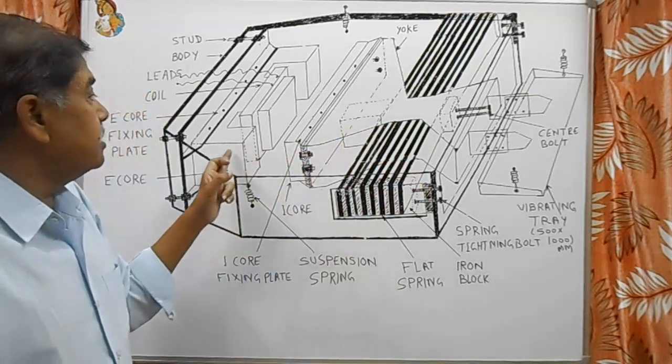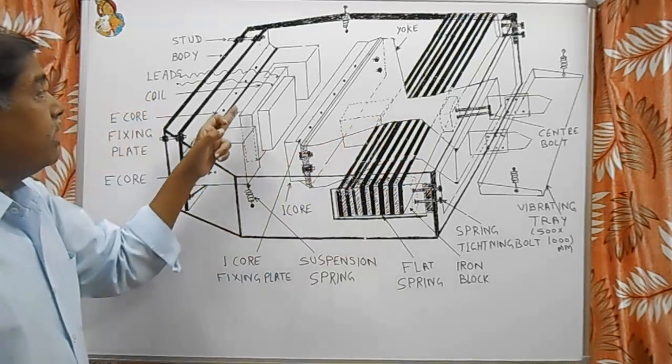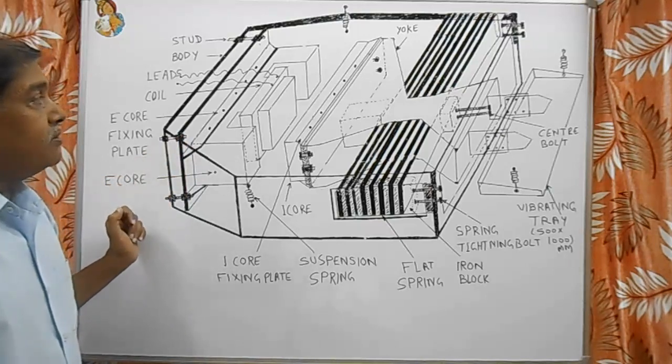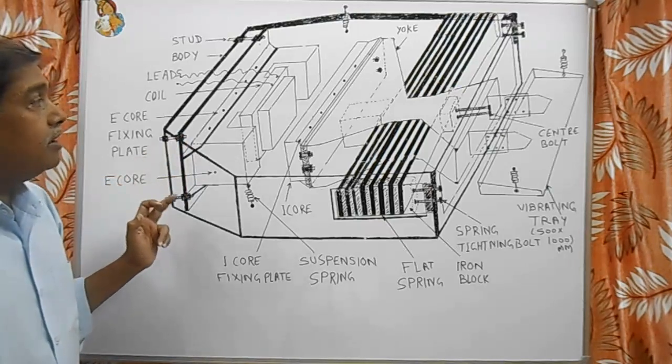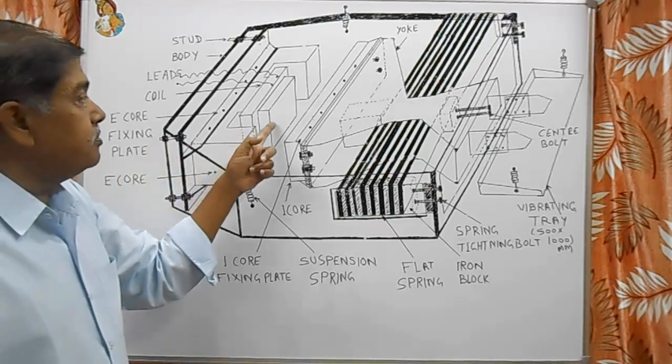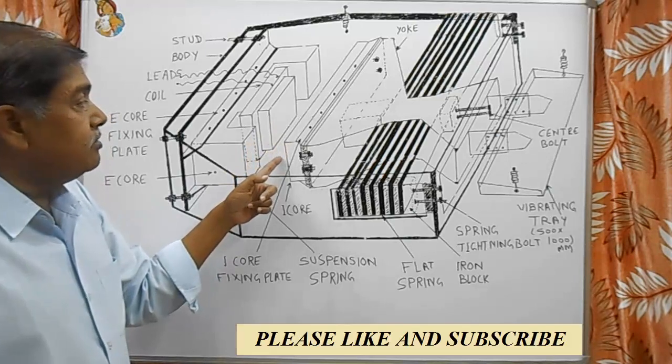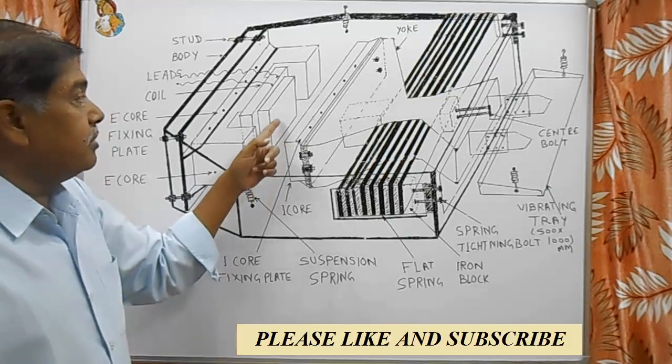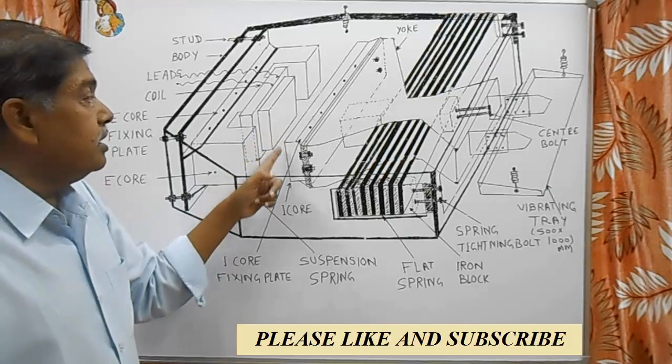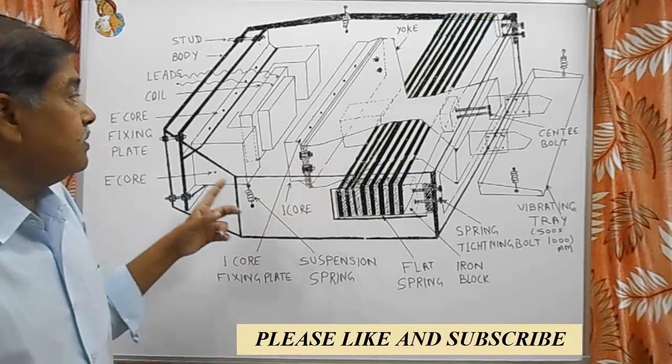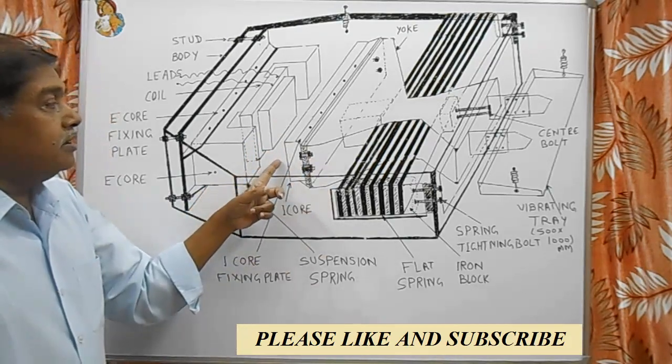The yoke is connected to the I-core, and here is the E-core. The coil is given 440 volt half-wave rectified supply. When we give supply to the coil, the E-core becomes magnetized and attracts the I-core. When the negative half cycle comes, the magnetism reduces to zero and the I-core comes back to horizontal position. In this way, the I-core vibrates at the frequency of 50 cycles per second.